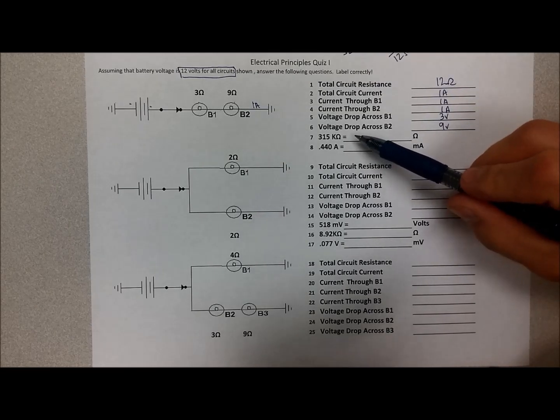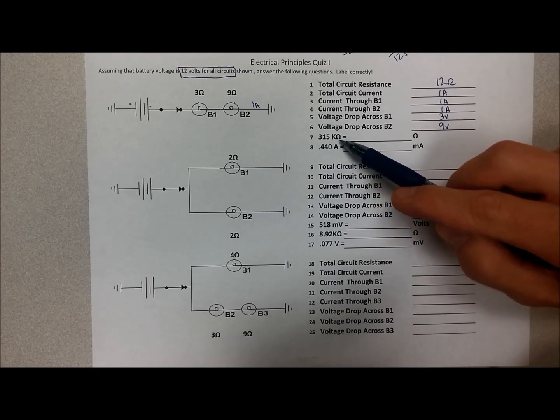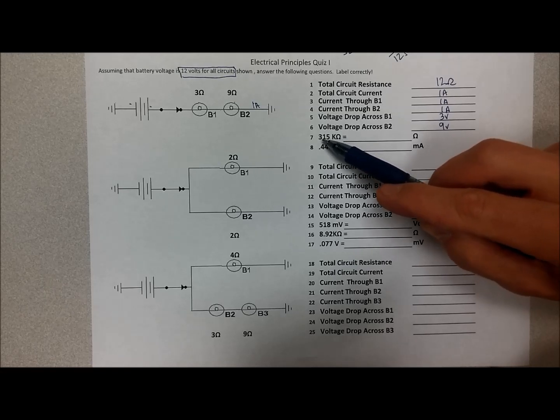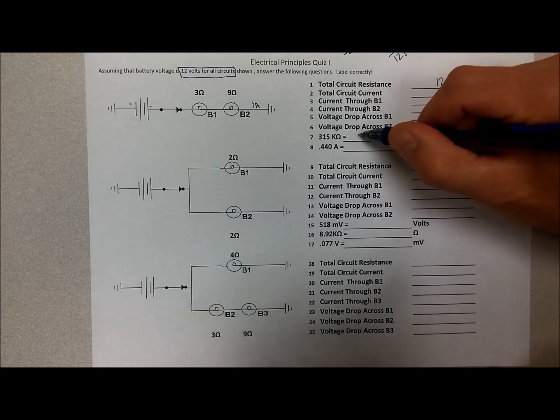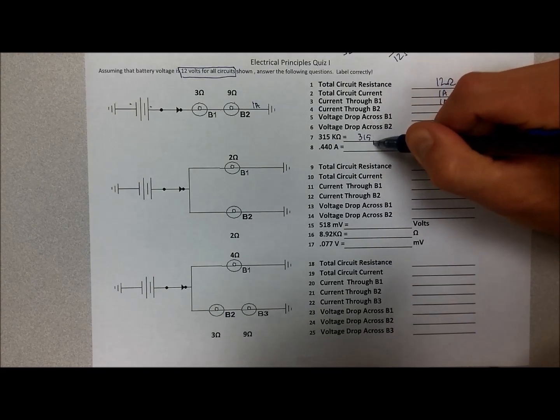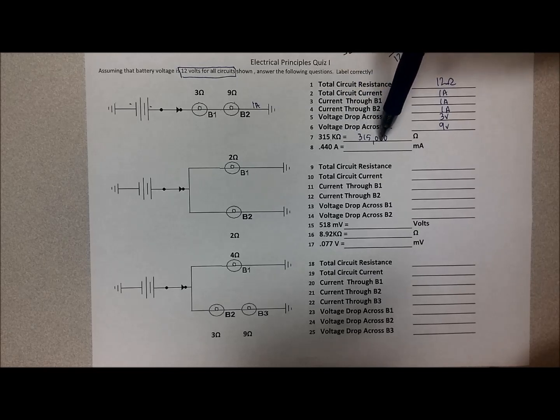Now we're down to the conversion questions here. 315 kiloohms, remember the big K, the kilo, means thousands. So 315,000 ohms is the answer there. You could also say, well, when you multiply it by a thousand, you can move the decimal over three places. We did that to add three more zeros to it. So 315,000 ohms.